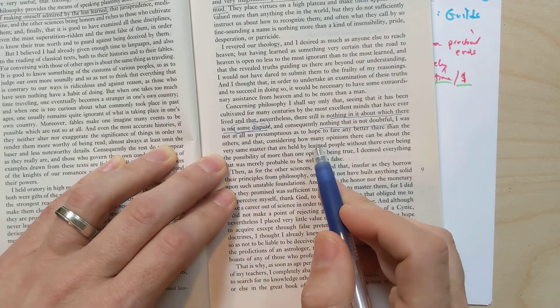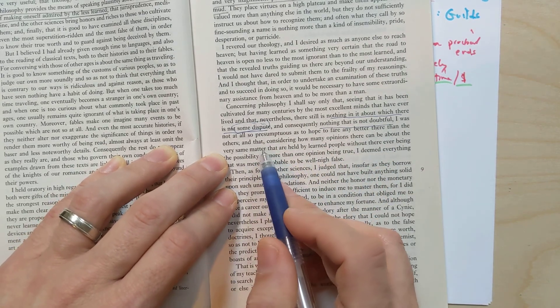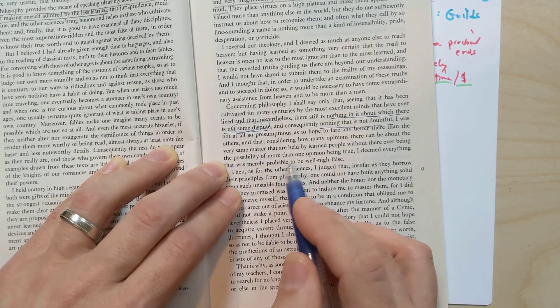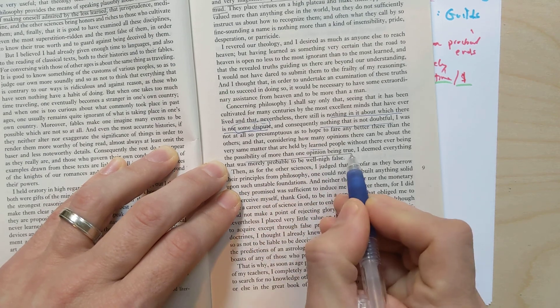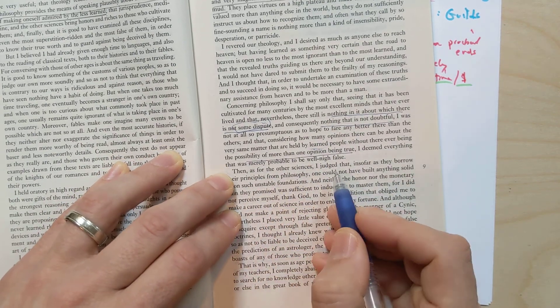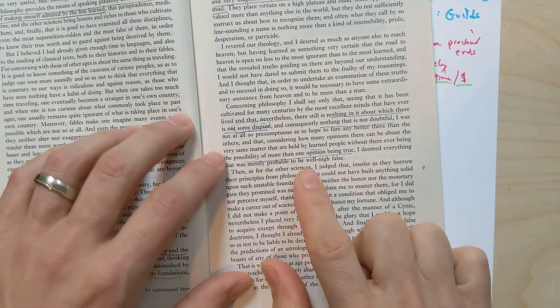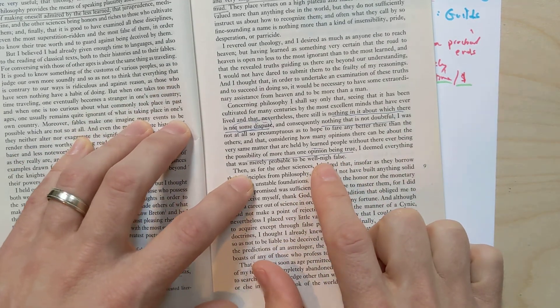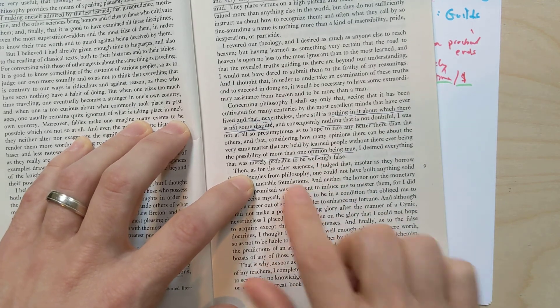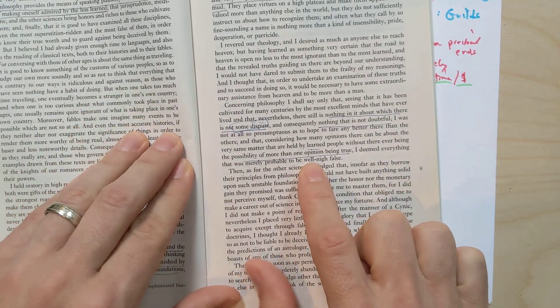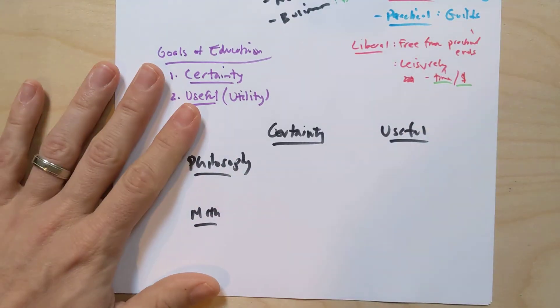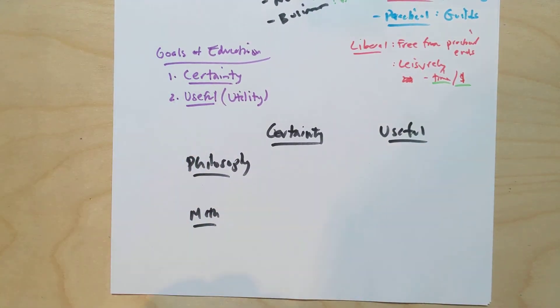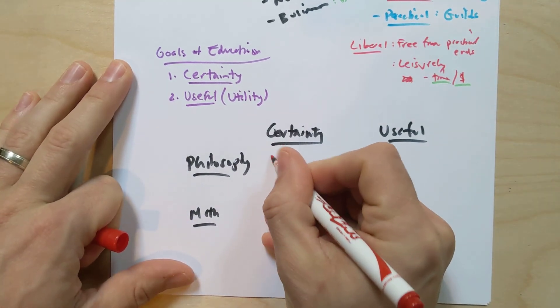I was not at all so presumptuous as to hope to fare any better there than others. And that considering how many opinions there can be about the very same matter that are held by learned people, without there ever being the possibility of more than one opinion being true, I deemed everything that was merely probable to be well nigh false. Now this is kind of interesting. But we've talked about the nature of opinion and whether opinions can be true or opinions can be false. And Descartes fundamentally saying that if people have fundamentally contradictory opinions, it's not possible that everyone is right. What does he notice? There's tons of opinions. The nature of philosophy is to be about things that are disputed. So Descartes' fundamental criticism of philosophy is that everything is disputed.